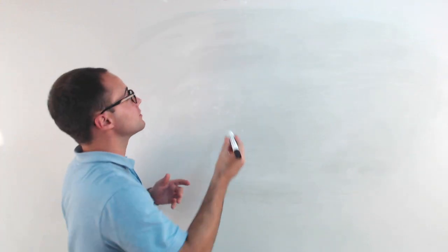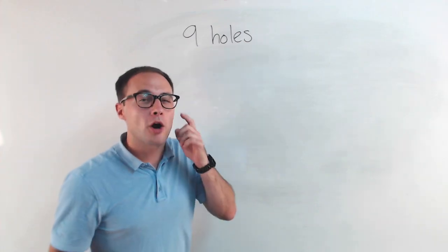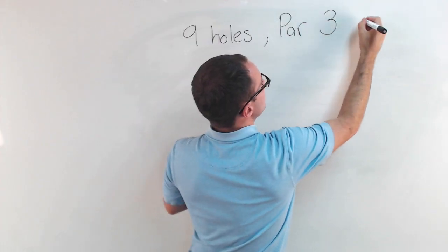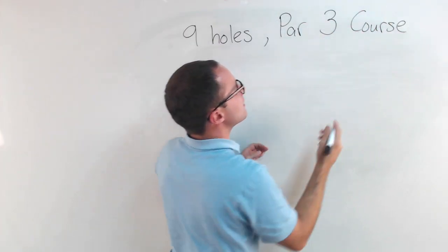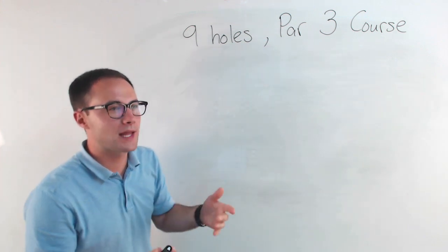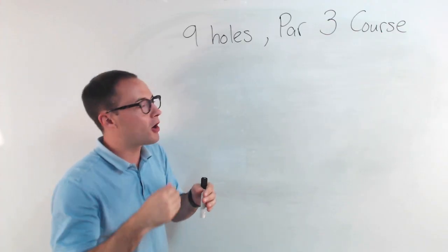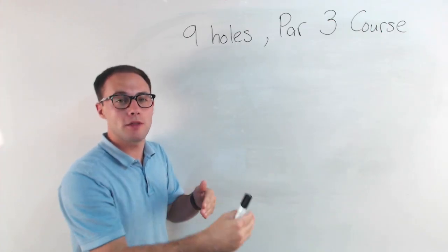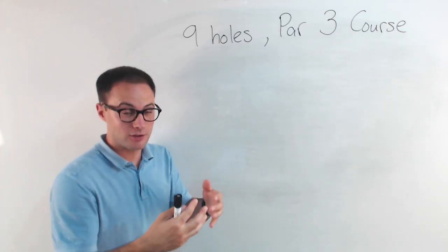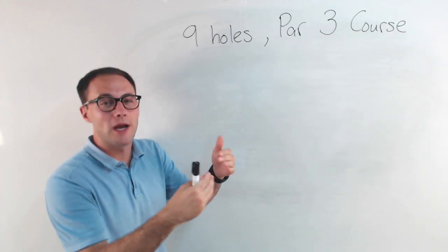First, I played nine holes and it was a par 3 course. What that means is every hole was a par 3, and you're expected to take three shots to get the ball in the hole. If you take more than three, then you're over par. If you take less than three, that's good — you're getting it in fewer than expected, which means you would be under par.